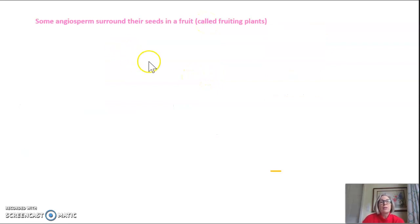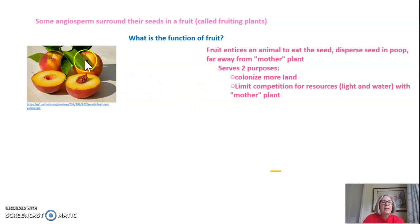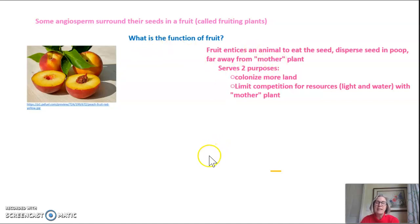Some angiosperms actually surround their seeds in a fruit — these are called the fruiting plants. Not all angiosperms produce fruits, but some do. What's the function of a fruit? Take a peach, for example. The fruit entices an animal to eat it, including the seed. The seed would pass through the digestive tract and be released in waste, presumably far away from the original mother plant. So this is a dispersal mechanism — it gets the seed moved away from where it first fell to the ground.